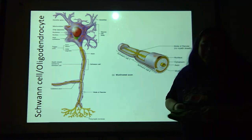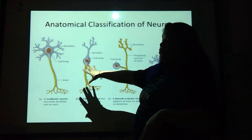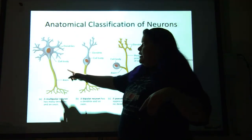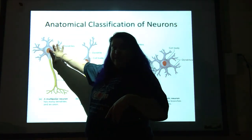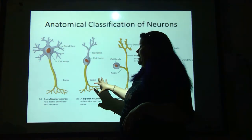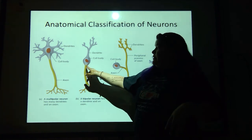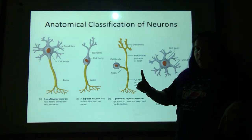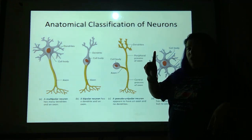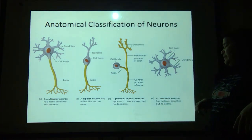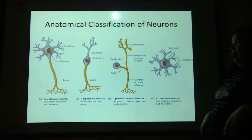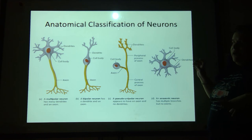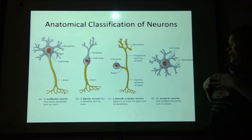Let's talk about the different anatomical types of neurons. First is the multipolar neuron — here's my cell body with many projections coming off of it. Next is the bipolar neuron — cell body with two projections. Then the pseudounipolar neuron — here's the cell body and the axon, with one projection coming off. Finally, the anaxonic neuron, where you've got basically a cell body with dendrites coming off of it everywhere but no distinct single axon — so it's not really multipolar.